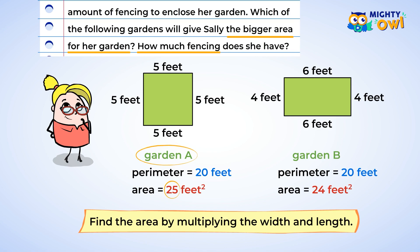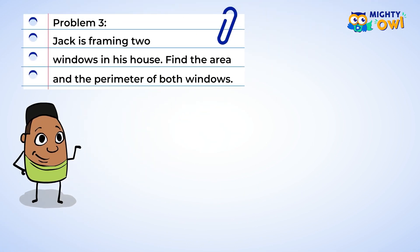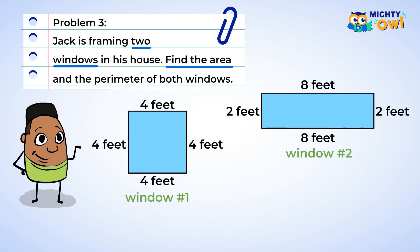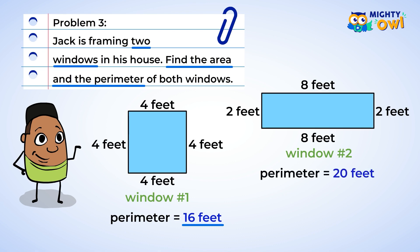So looking at the two options, Sally would have a larger garden area if she chooses Garden A. Great work! Let's do another problem. Jack is framing two windows in his house. Find the area and the perimeter of both windows. Let's start by finding the perimeter of window number 1: 4 plus 4 plus 4 plus 4 equals 16. Window number 1 has a perimeter of 16 feet. Now window number 2: 8 plus 2 plus 8 plus 2 equals 20. Window number 2 has a perimeter of 20 feet.